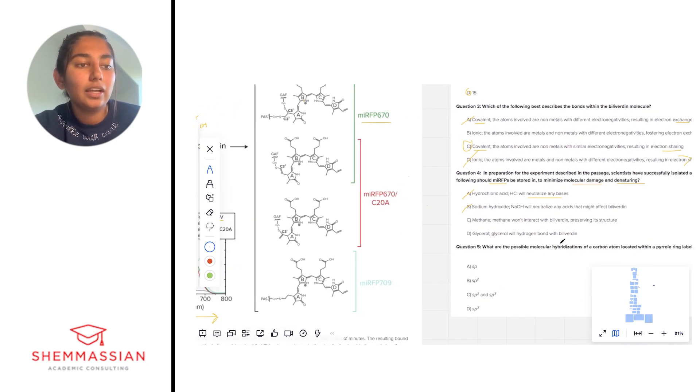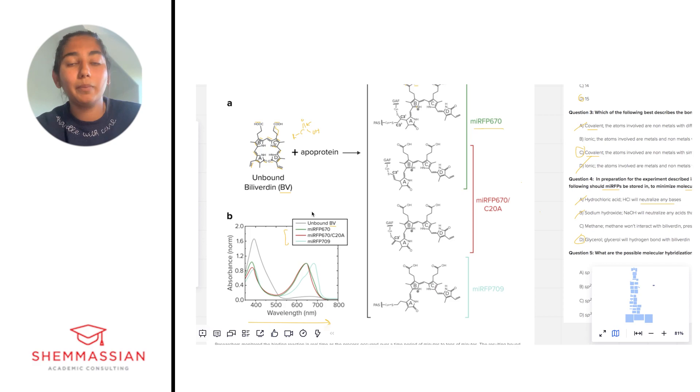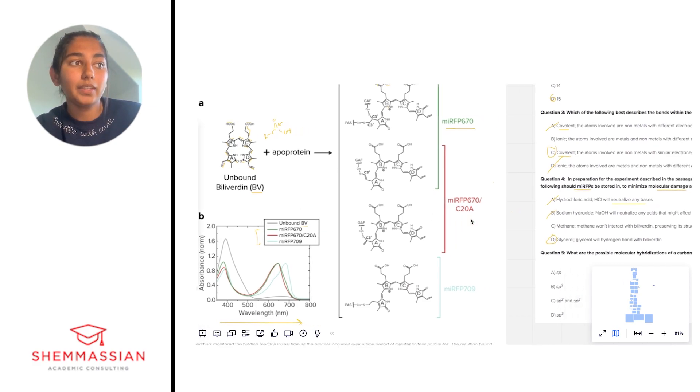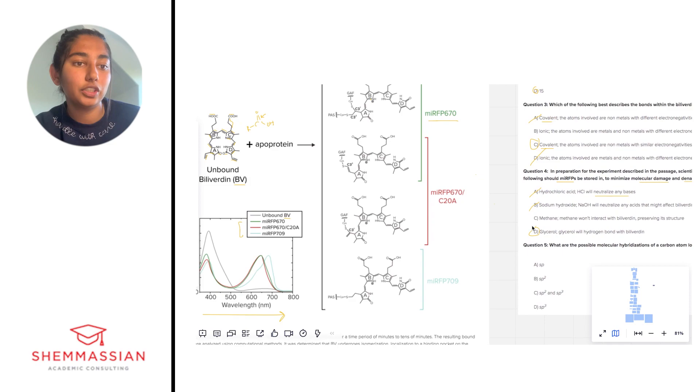If we look at glycerol, glycerol is not completely nonpolar. It does have a lot of nonpolar parts, but it does have the ability to hydrogen bond with BV. So if we're looking between C and D at which one is most like BV, the answer is D because methane is just simply too nonpolar. Glycerol does have a little bit of hydrogen bonding capability which will complement the BV well and preserve its ability to hydrogen bond in the future.